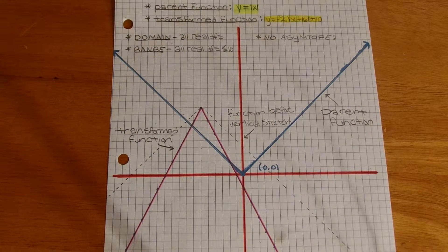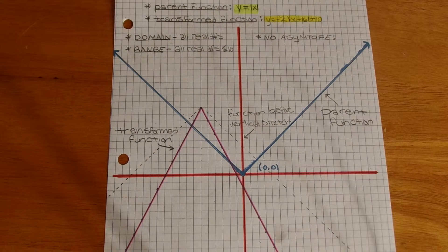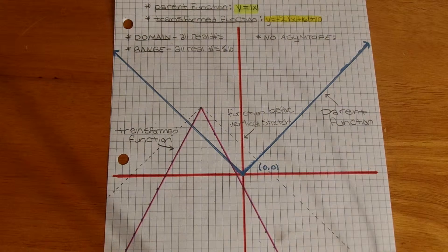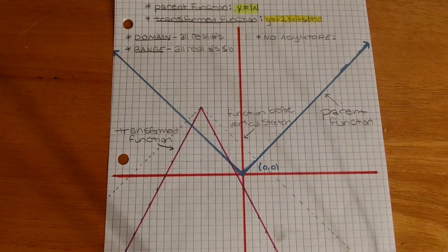To tell whether you move left or right, and then the last number in the end, on the outside of the absolute value lines, that tells you whether you're moving up or down and by how much.